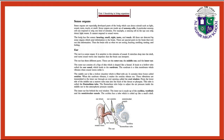These vibrations are transmitted to the inner ear through an oval opening called the oval window. From the lower side of the middle ear, a narrow tube runs into the back of the throat — this tube is called the Eustachian tube. The Eustachian tube helps to adjust the air pressure inside the middle ear to the atmospheric pressure outside.